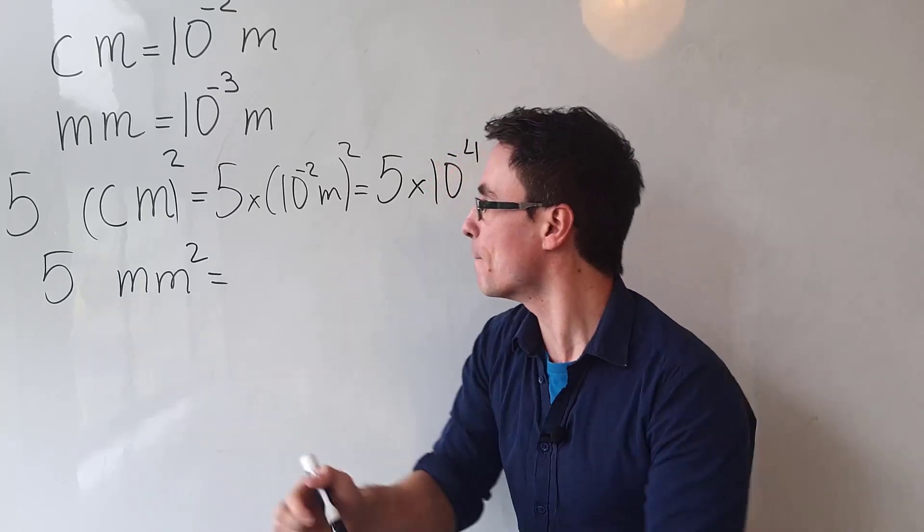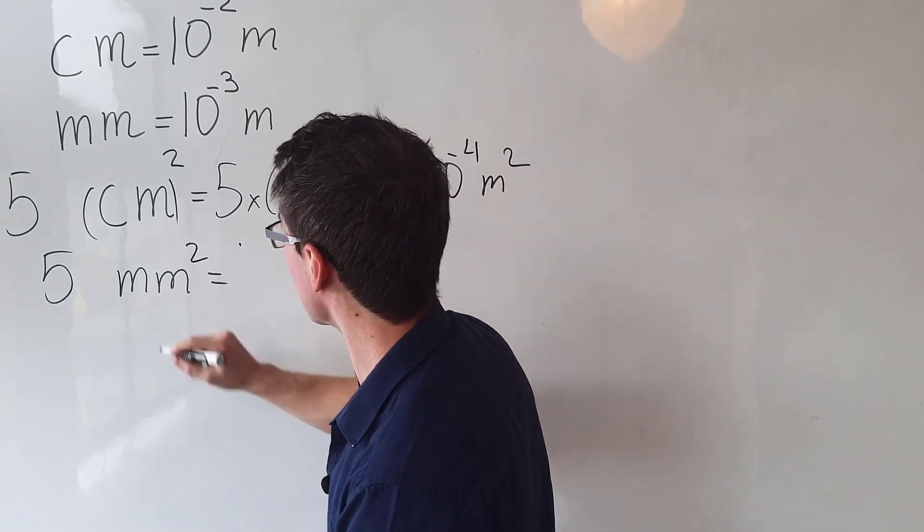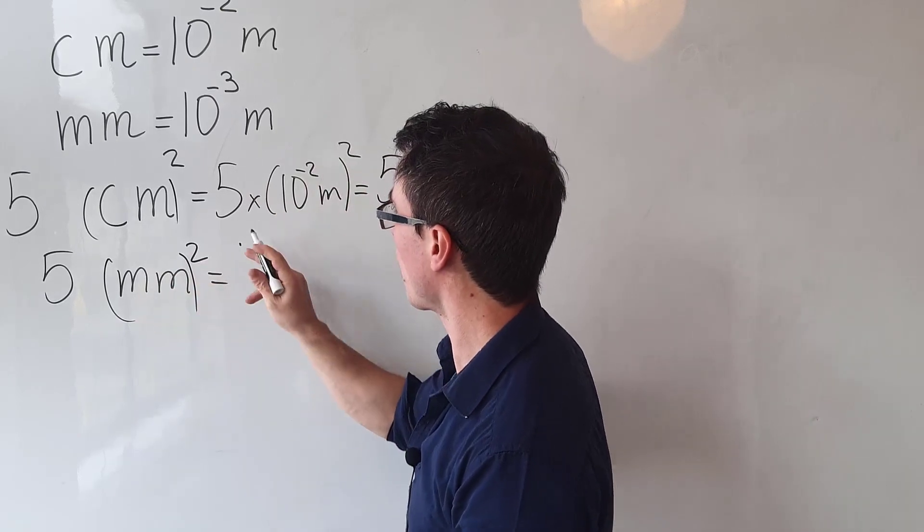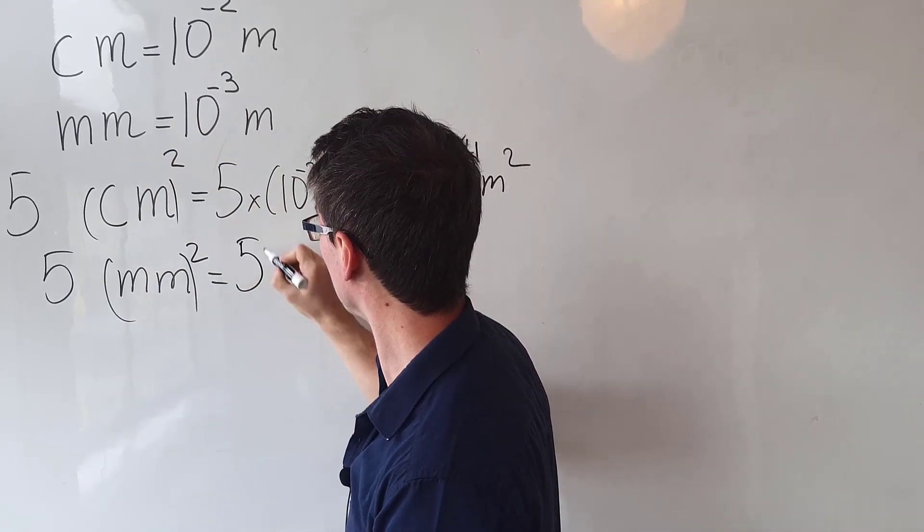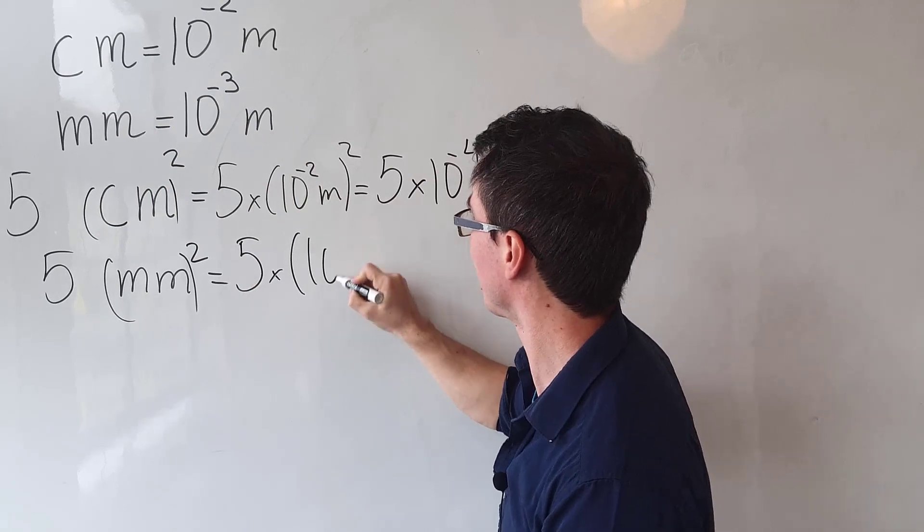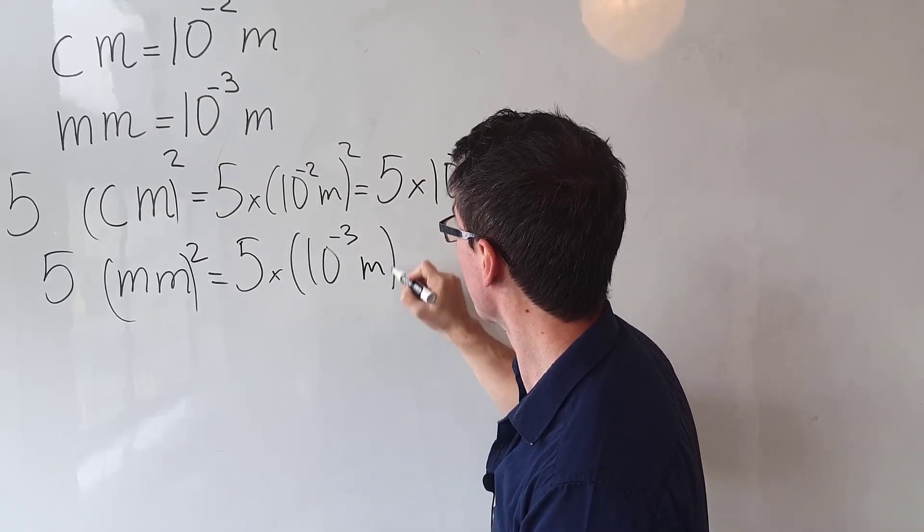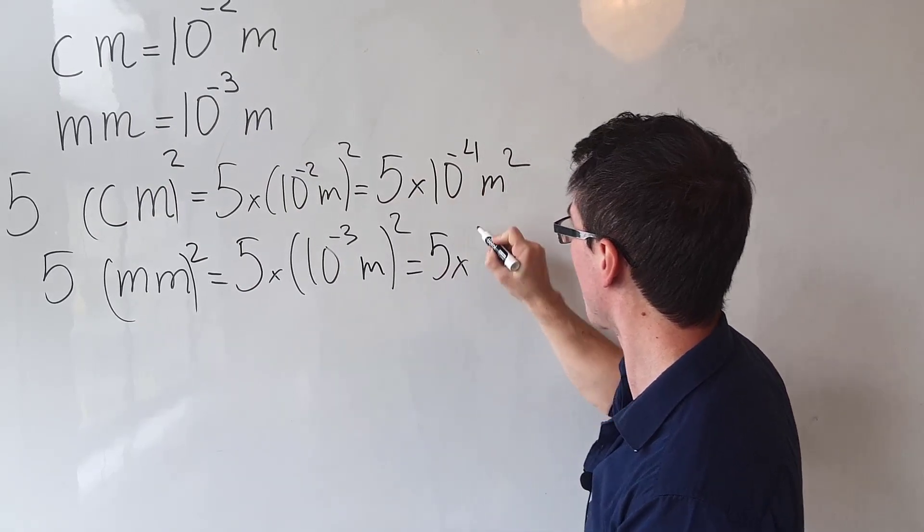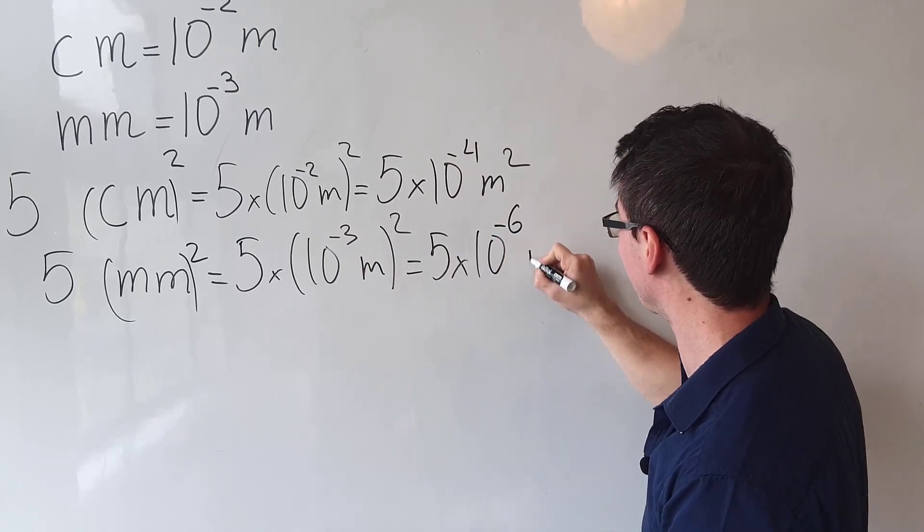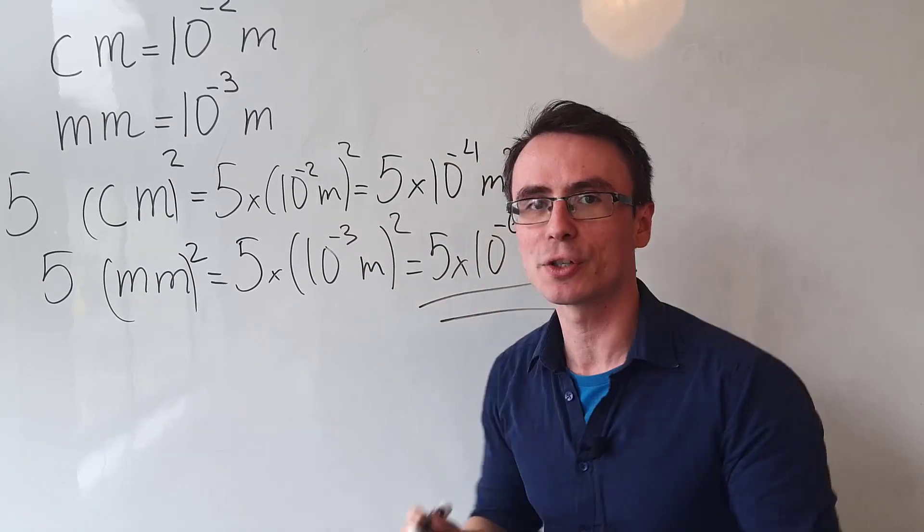If we have 5 millimeters squared, all we need to do is remember that the square acts on both. Now milli is 10 to the power of minus 3, so this here will be 5 times 10 to the power of minus 3 meters squared, which will be equal to 5 times 10 to the power of minus 6 meters squared.